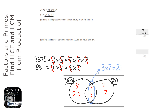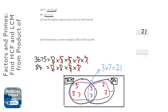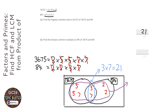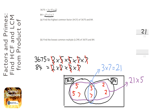Now to find the lowest common multiple, which is question B, what you need to do is times all of them together — every single one. You might wonder, surely that's just going to give us 3,675 times 84, so why couldn't I just do that? Well, the overlapping ones we're only going to write once. So the 3 and the 7 in the middle, we're only writing them once. If we did 3,675 times 84, we would be multiplying by 3 and then by 7 again. So we've already done the middle bit — the 21 in the middle — and I need to do the ones around the side. So we've got 5 times 5 times 7 times 2 times 2.